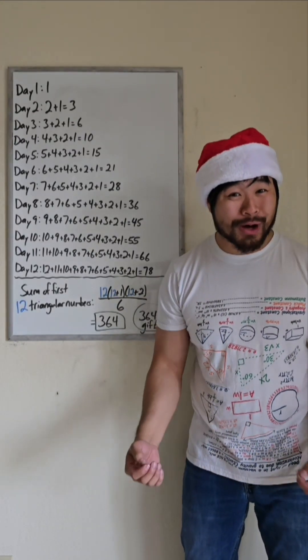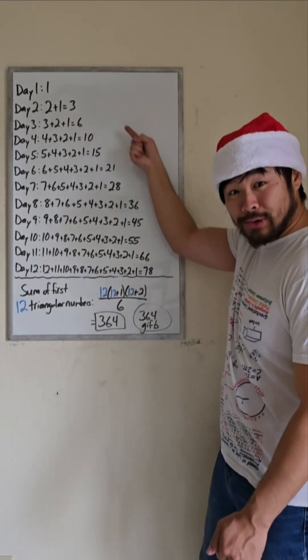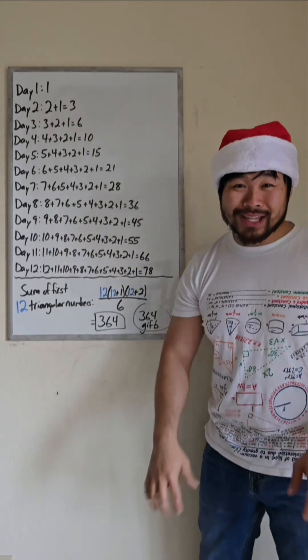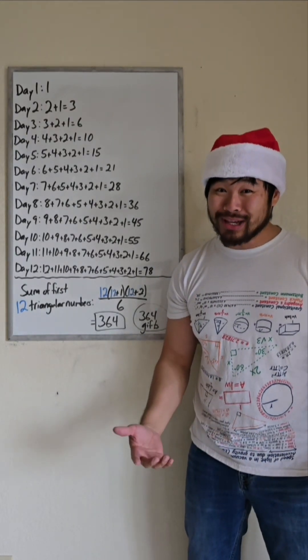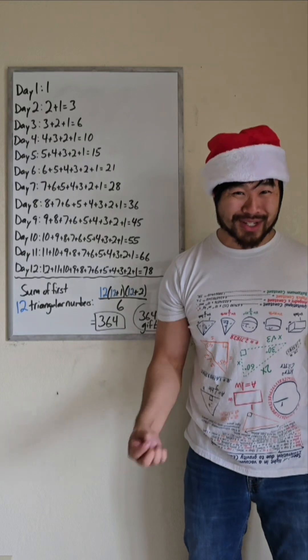And when we substitute in 12 for n, since we want the sum of the first 12 triangular numbers, we get 364. So 364 gifts were given in the song 12 Days of Christmas.